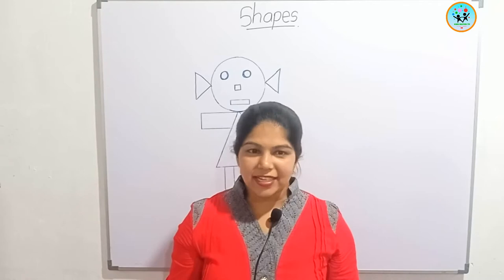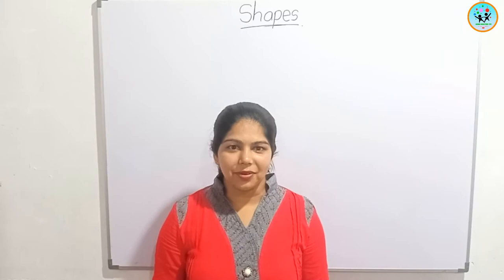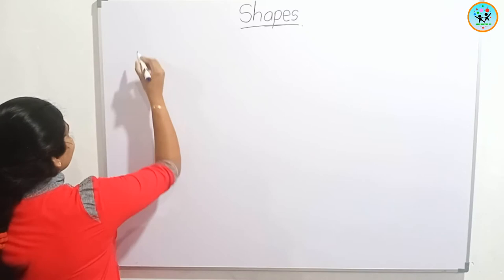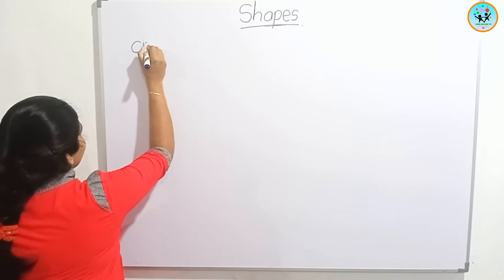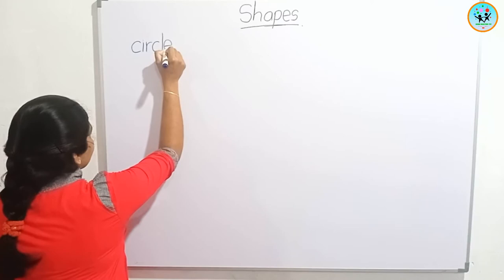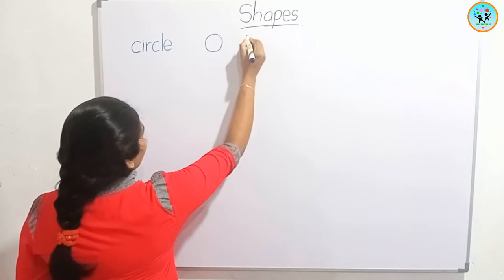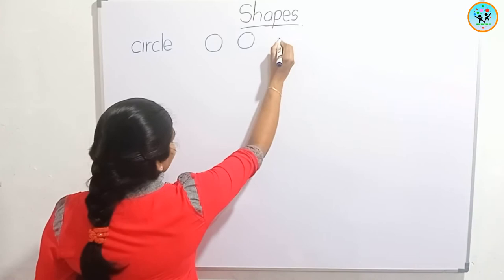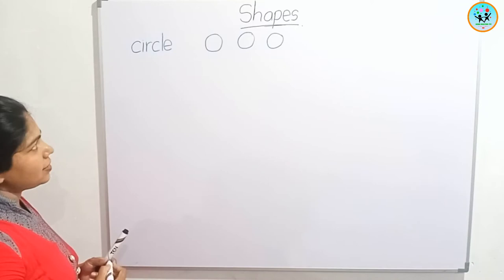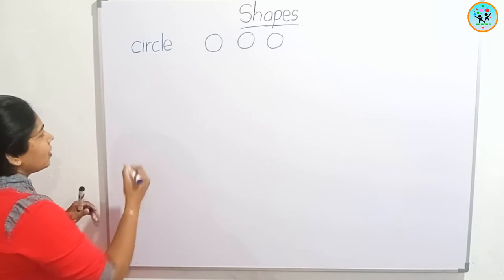Let's do an activity. Now you are going to learn how to draw shapes. We'll start from the circle. This is a circle.